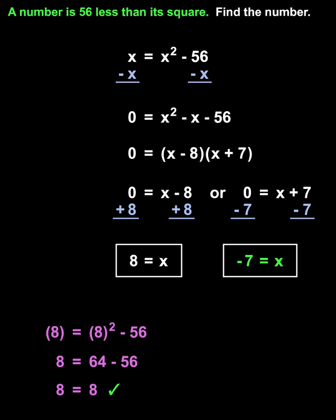And plugging a negative 7 back into the original problem, we have negative 7 is 56 less than negative 7 squared, or negative 7 equals negative 7 squared minus 56, which simplifies to negative 7 equals 49 minus 56, or negative 7 equals negative 7, which is also a true statement.